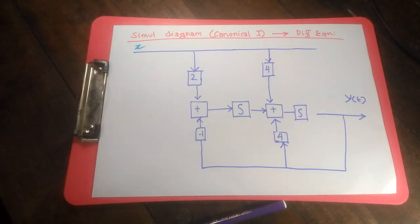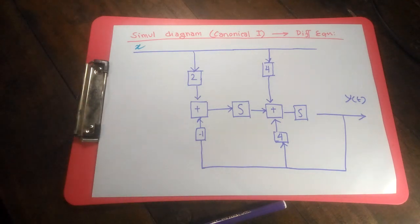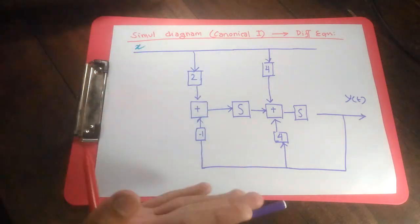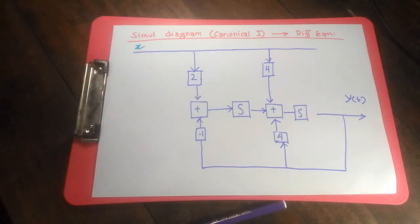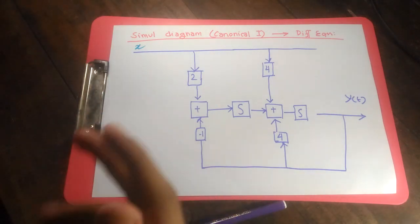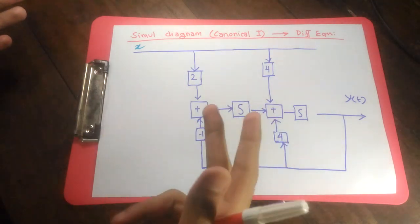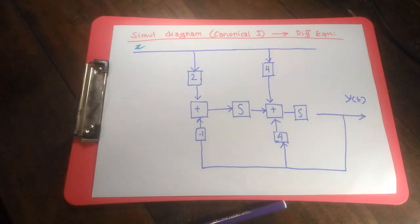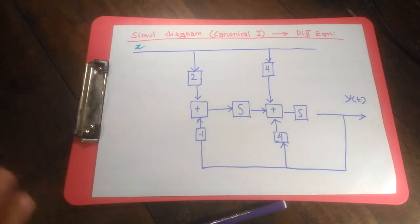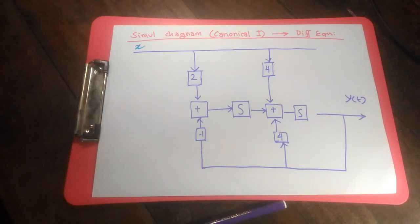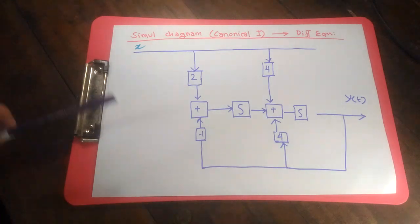Canonical form 1 is the less advanced way of thinking algorithmically. We're going to do two things: first, have a simulation diagram, read it, and write down the differential equation of the system from it; and secondly, have a differential equation and build our own simulation diagram, which is canonical form 1. In canonical form 1, you decide earlier what is going to be your first derivative, second derivative, and put input according to that.